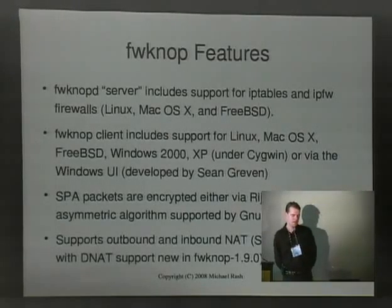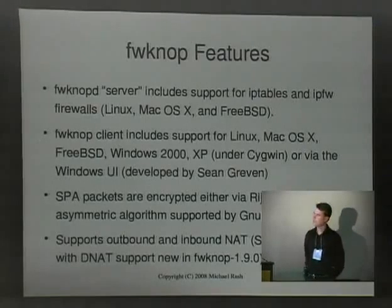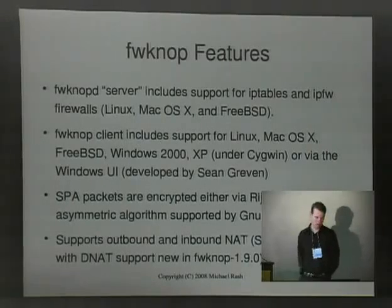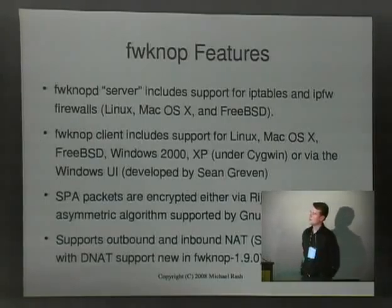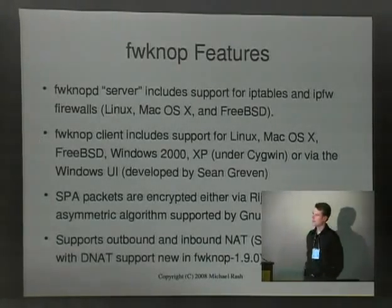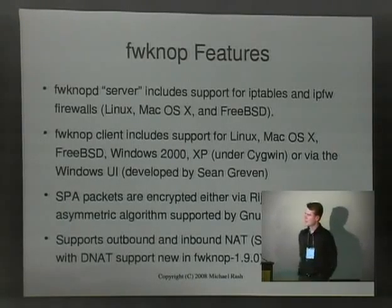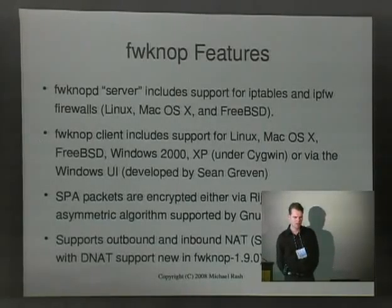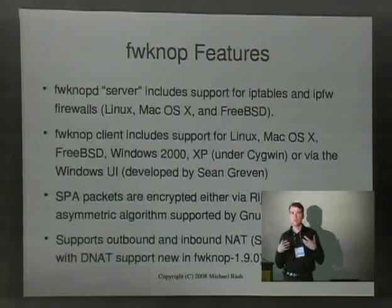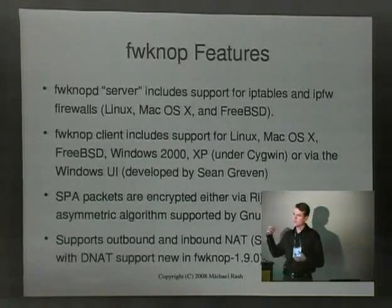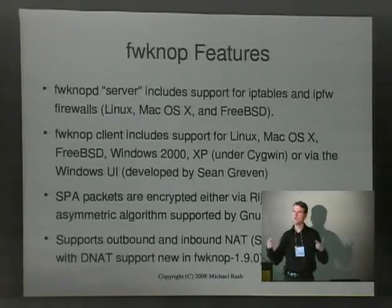FWKnop today offers server support on Linux, Mac OS X, and FreeBSD — any system that can run IP tables or the IPFW firewall. The client has been ported to several operating systems, and there's also a UI developed by Sean Greven written in Delphi, with a Java one on the way. SPA packets are encrypted via Rijndael or an asymmetric algorithm supported by GnuPG. In version 1.9.0, DNAT support was added — you can use that to allow your FWKnop server to essentially act as a router, automatically building IP tables DNAT rules to forward an attempted SSH connection onto an internal system you specify.